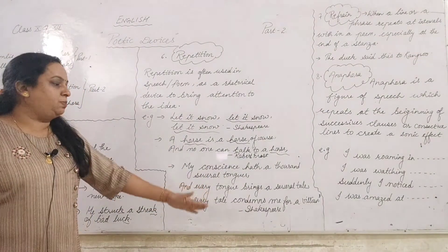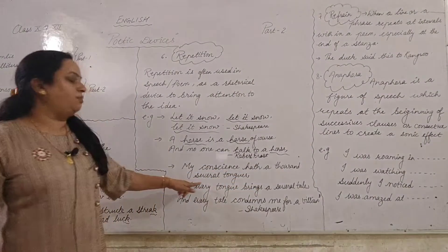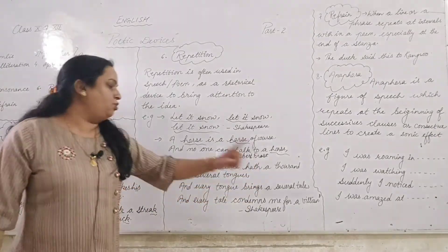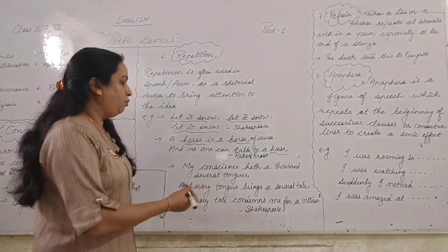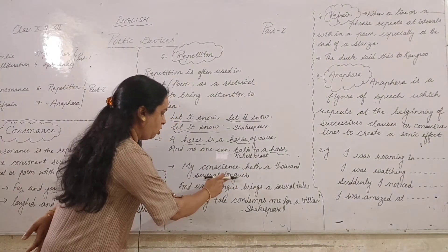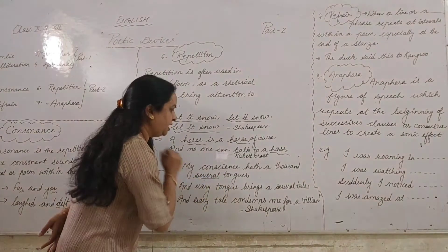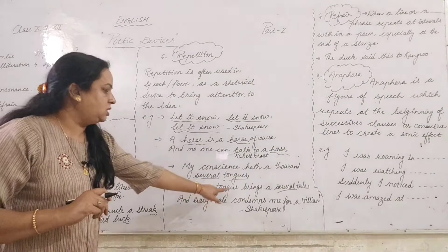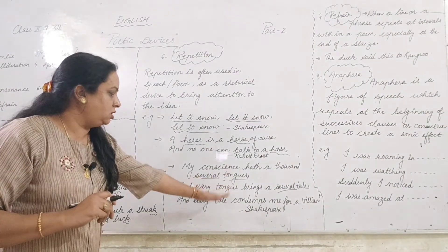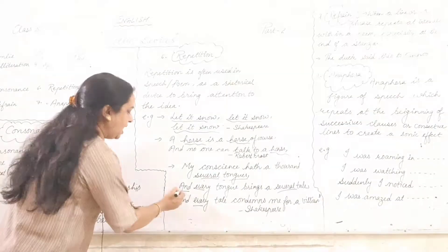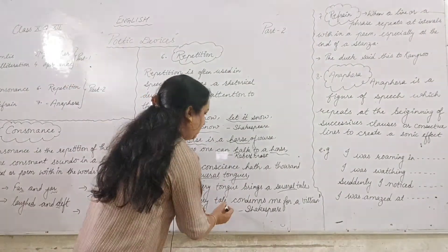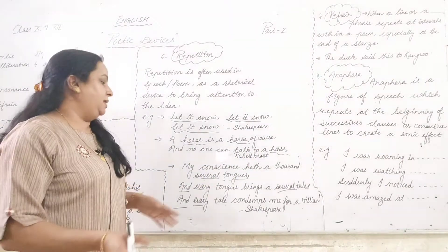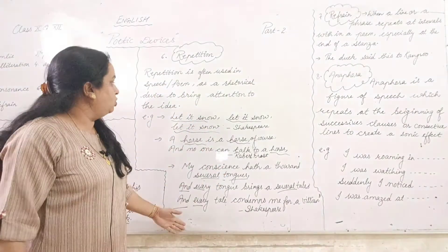Another example from Shakespeare: 'My conscience hath a thousand several tongues, and every tongue brings in several tales, and every tale condemned me to be a villain.' Here, 'several' is repeated, 'every' is repeated, and 'and' is repeated. Note that 'tongues' and 'tongue' are not the same, and 'tale' and 'tales' are not the same — exact repetition is required. When words repeat at different places in a stanza, that is repetition.